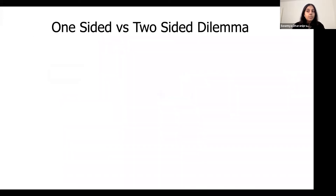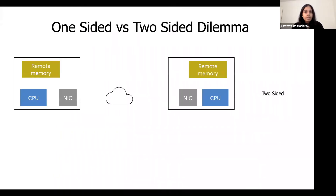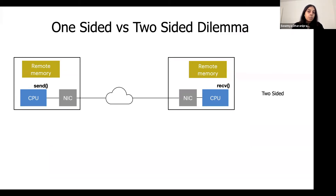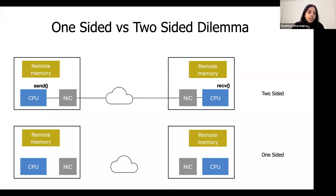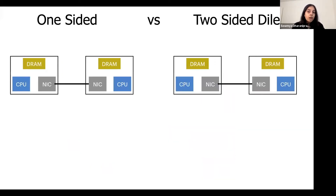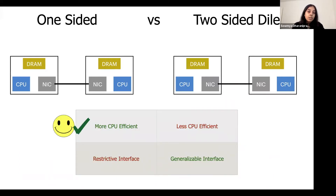The RDMA interface broadly has two kinds of operations: two-sided and one-sided. Two-sided operations have standard message-passing semantics, where a client machine's CPU invokes an RDMA send operation and the application running on the remote host invokes an RDMA receive operation. One-sided operations allow a client to read or write directly to a remote memory region with no additional CPU involvement on the remote host. One-sided operations are faster and more CPU efficient, but their interface is restrictive, allowing only reads and writes to pre-registered memory buffers. Two-sided operations offer richer semantics, but are often slower and less CPU efficient.